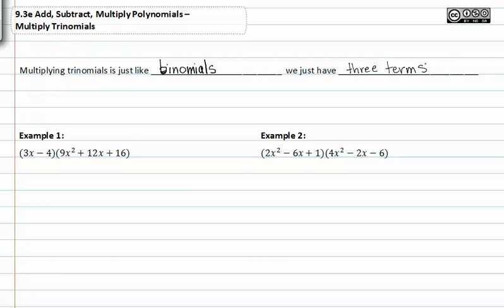In example one, we have a binomial times a trinomial. So it's kind of like extended FOIL. We multiply the first term in the binomial to each term in the trinomial.